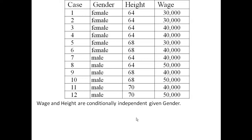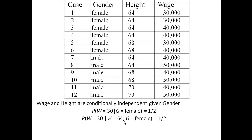But we showed that they are independent given gender. Once we know the person is female, the probability of making $30,000 is one-half. If we condition on being a 64-inch female, it's still one-half. If we condition on being a 68-inch female, it's still one-half, and there are no 70-inch females according to this. So wage and height, although they are not independent, they are conditionally independent given gender. We write this as: independent of wage and height given gender.